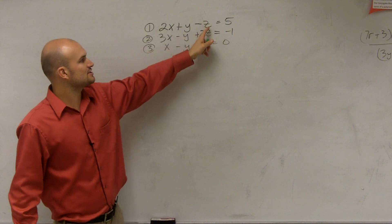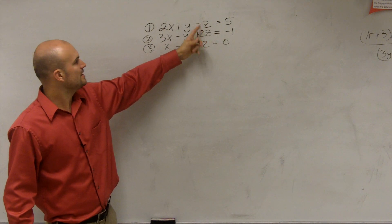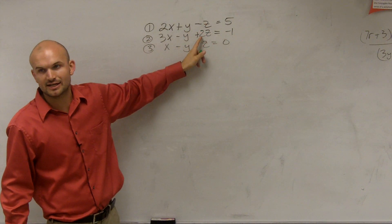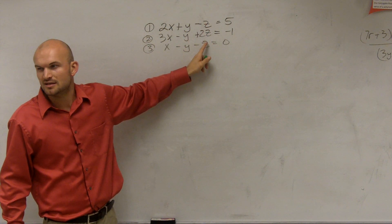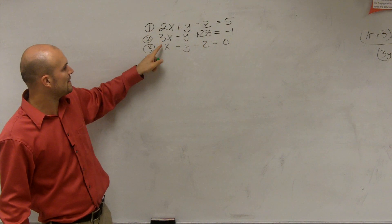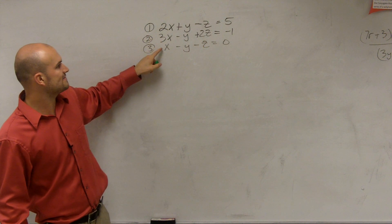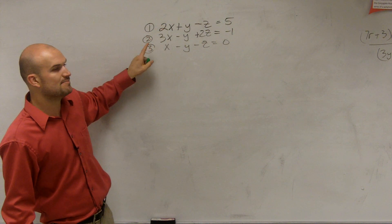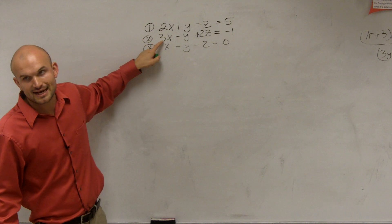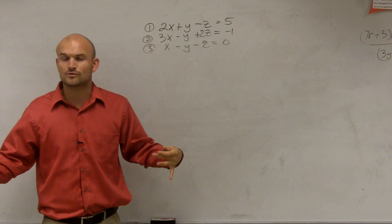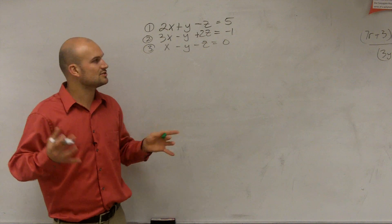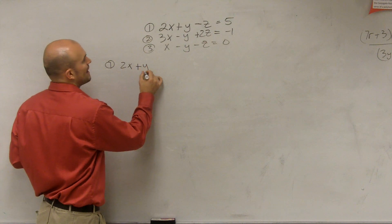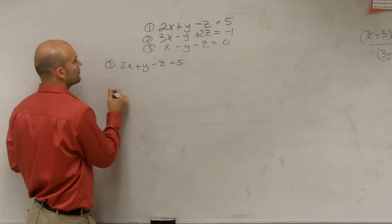However, if you wanted to eliminate z, you'd have to multiply equation one by two to add it to the second equation to get zero z. And if I wanted to get rid of x, I would have to multiply by negative two to add it to equation one, and then multiply by negative three to add it to the second equation. So that's a lot of extra work — I'm trying to do the least amount of work as possible.